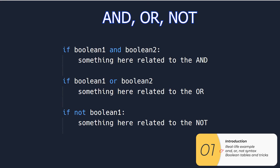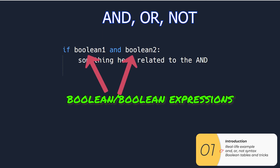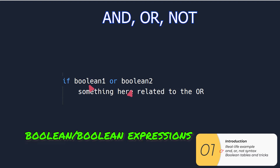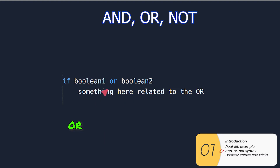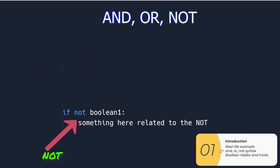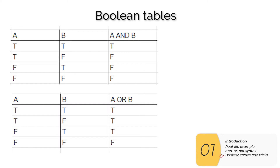In Python we implement these through the `and`, the `or`, and the `not`. If we have two boolean expressions and we need them both to be true, we use `and`. If we have two boolean expressions and we can pick either one to be true, we use `or`. And if we have a boolean that we want to check to see if it's the opposite, we use `not`.